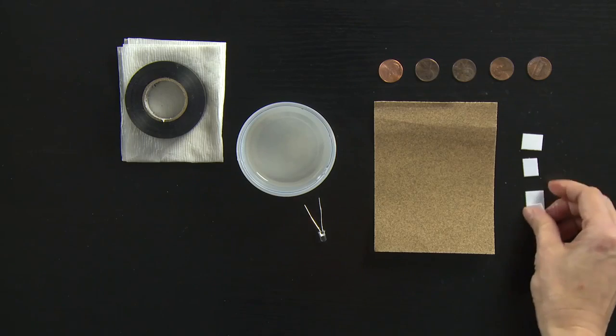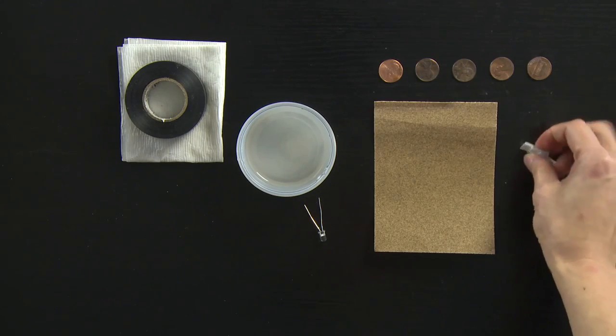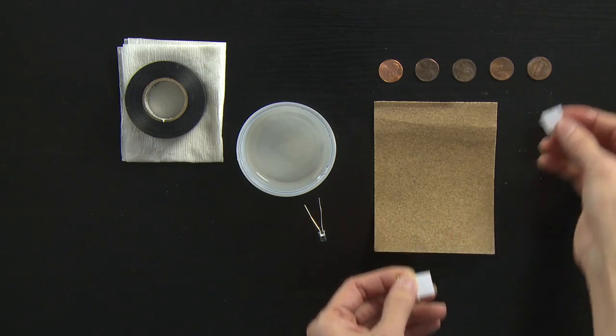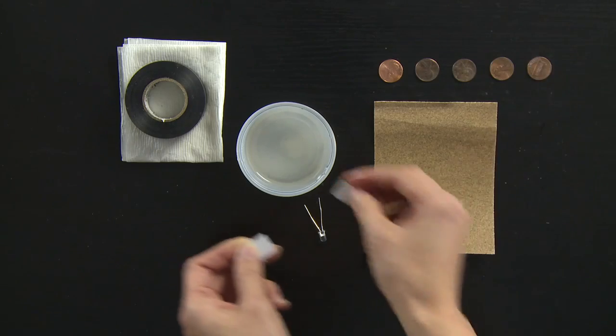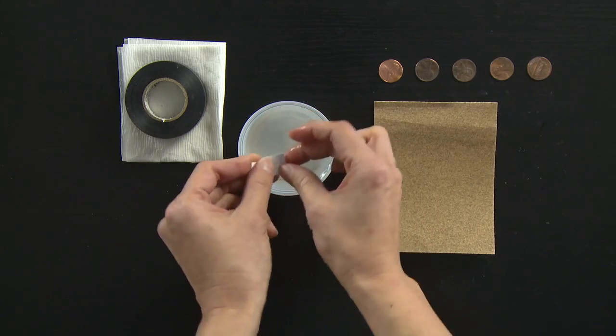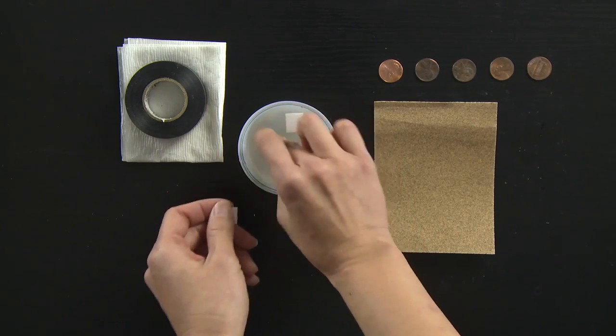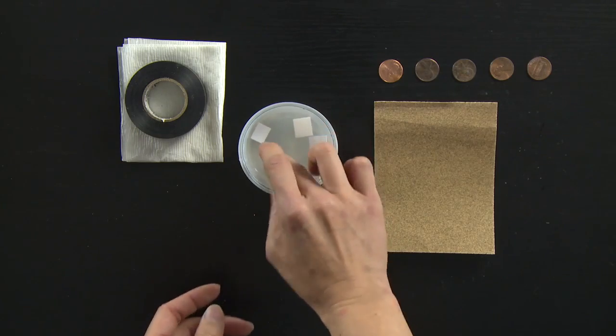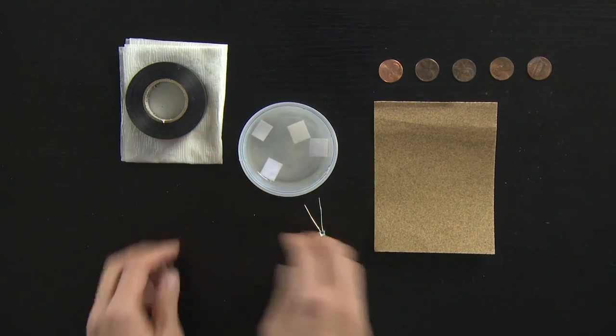We're going to use the mat board squares to soak up the salt solution. So I've cut four pieces of mat board that are about the size of a penny and just stick them in the solution so that they soak up all that salt water.